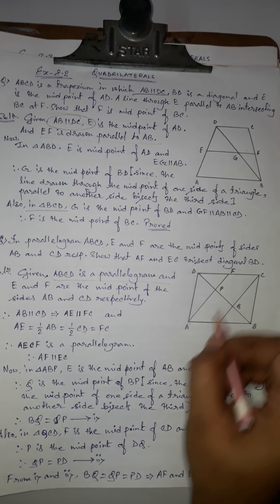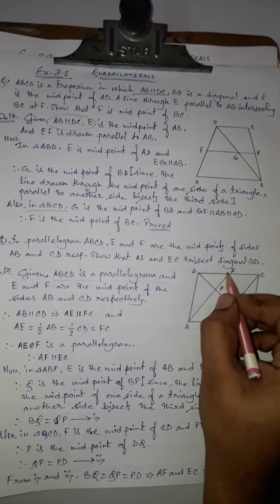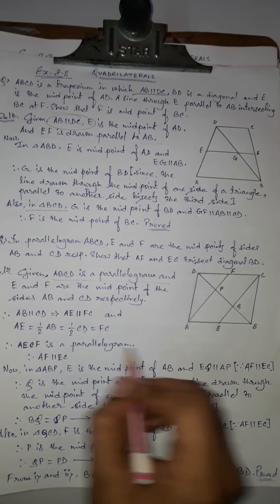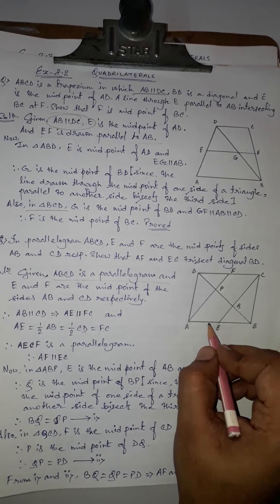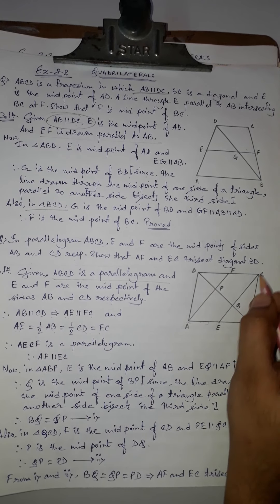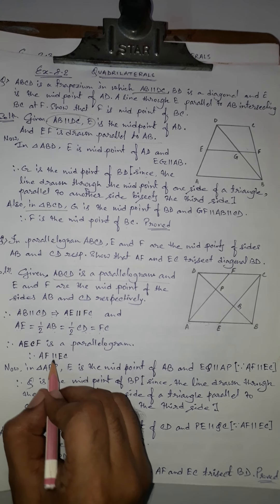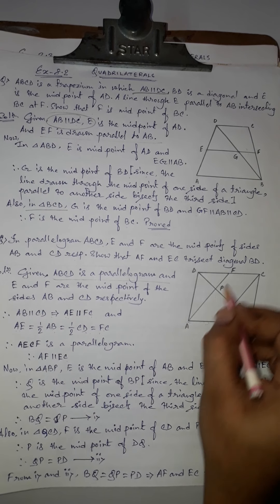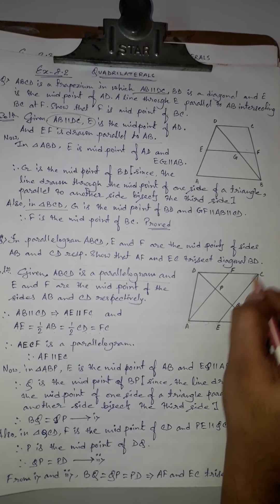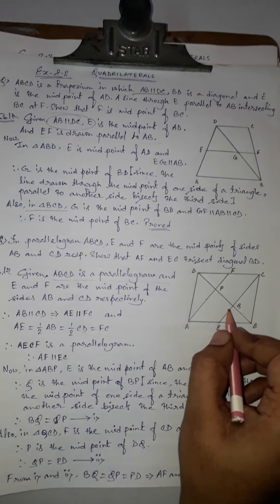Since AE is parallel to FC and AE equals FC — a pair of opposite sides are equal and parallel — AECF is a parallelogram. Therefore AF is parallel to EC, as opposite sides of parallelogram AECF are parallel.